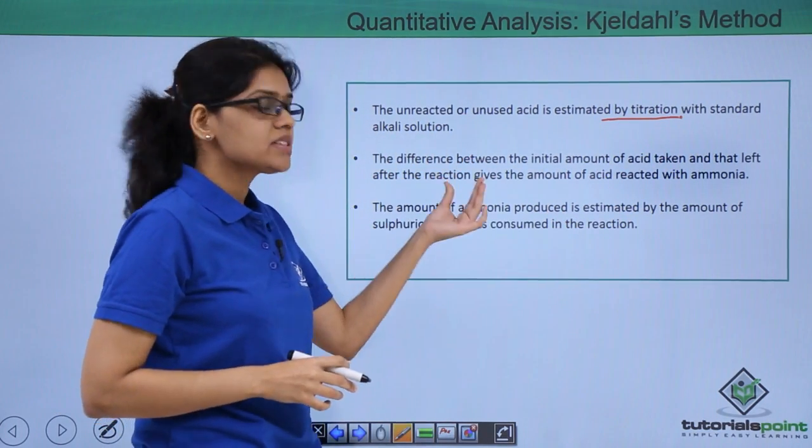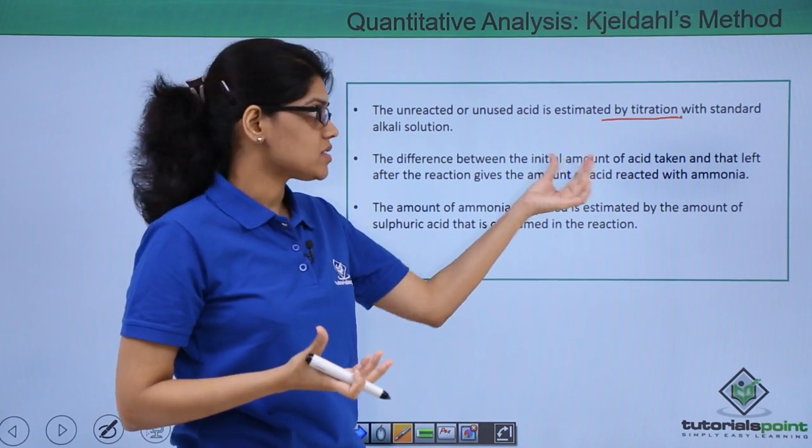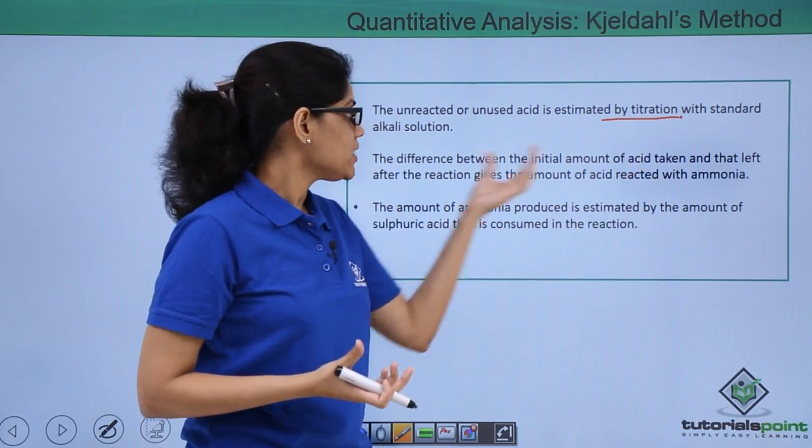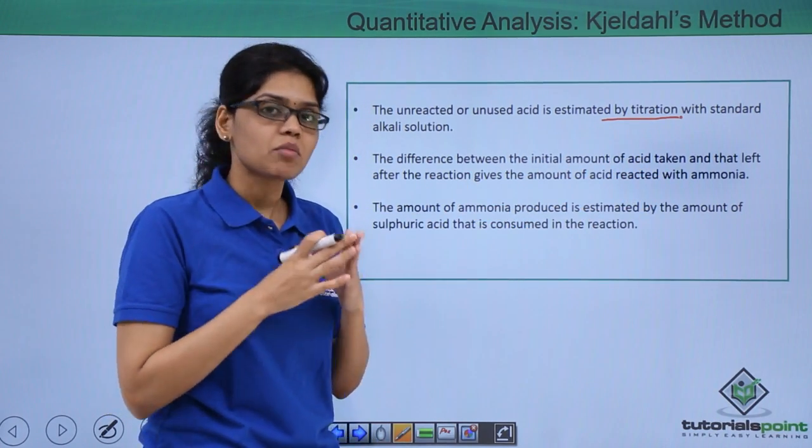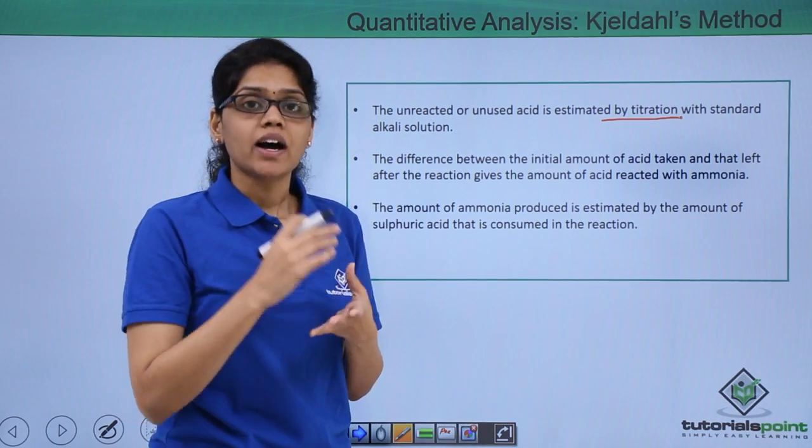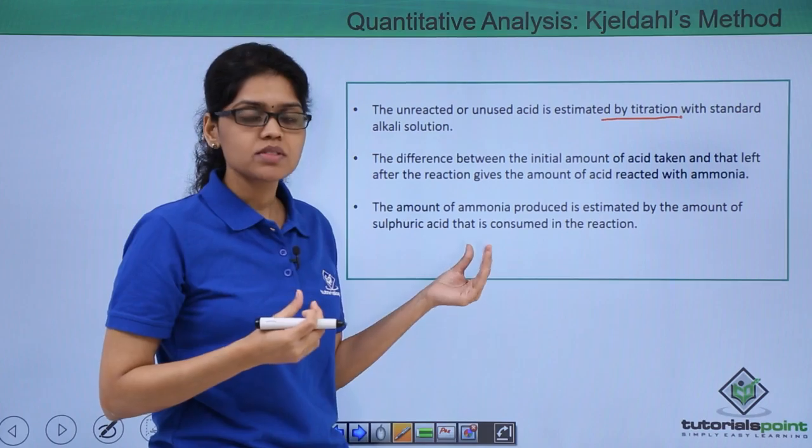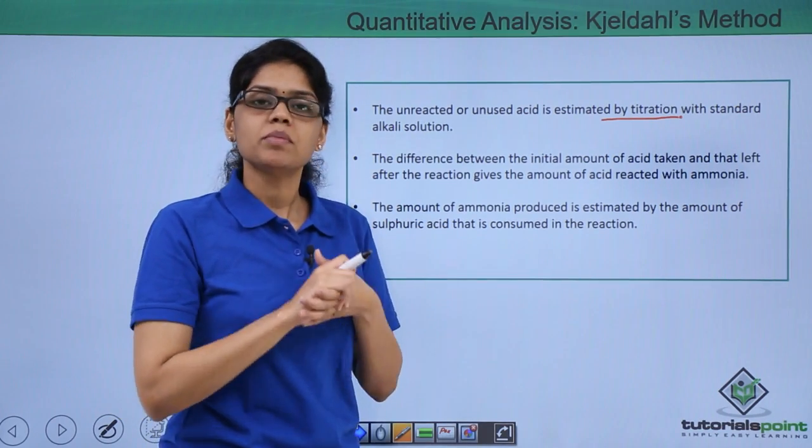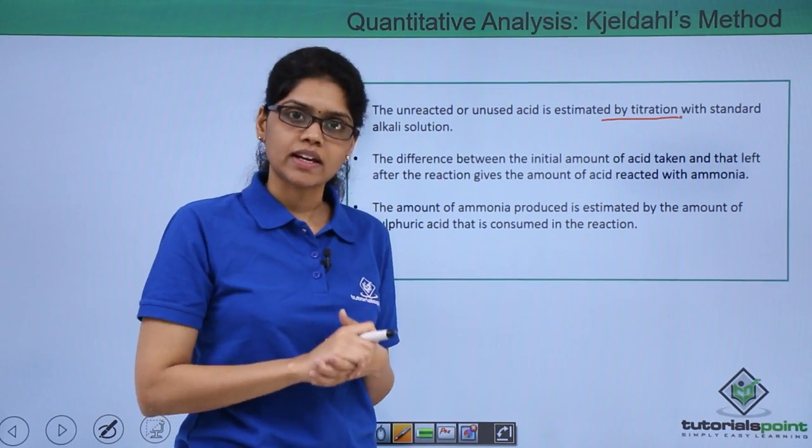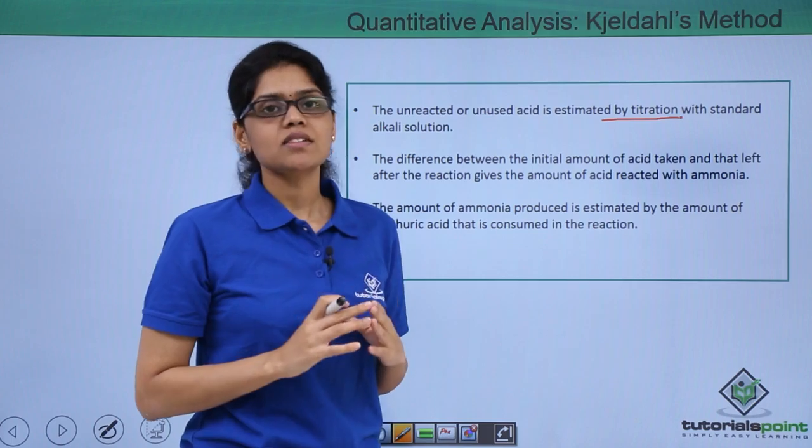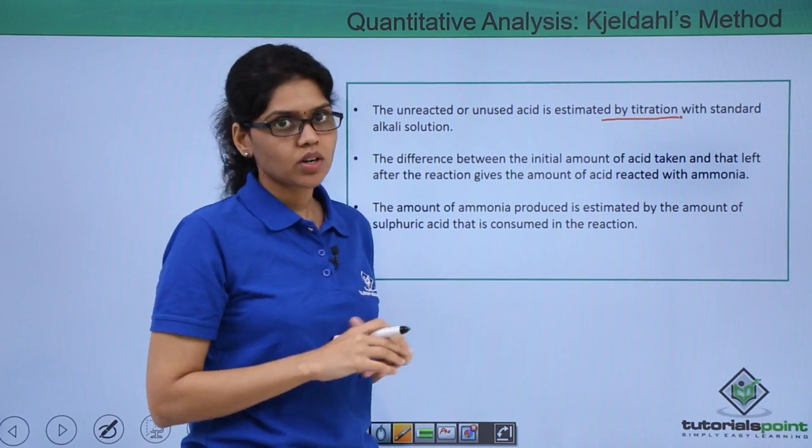The difference between the initial amount of acid that was taken and that left after the reaction gives the amount of acid that reacted with ammonia. From that we can easily determine the amount of ammonia produced, and we will be able to estimate the percentage of nitrogen in our organic compound. Let's quickly summarize the various reactions involved in this method.